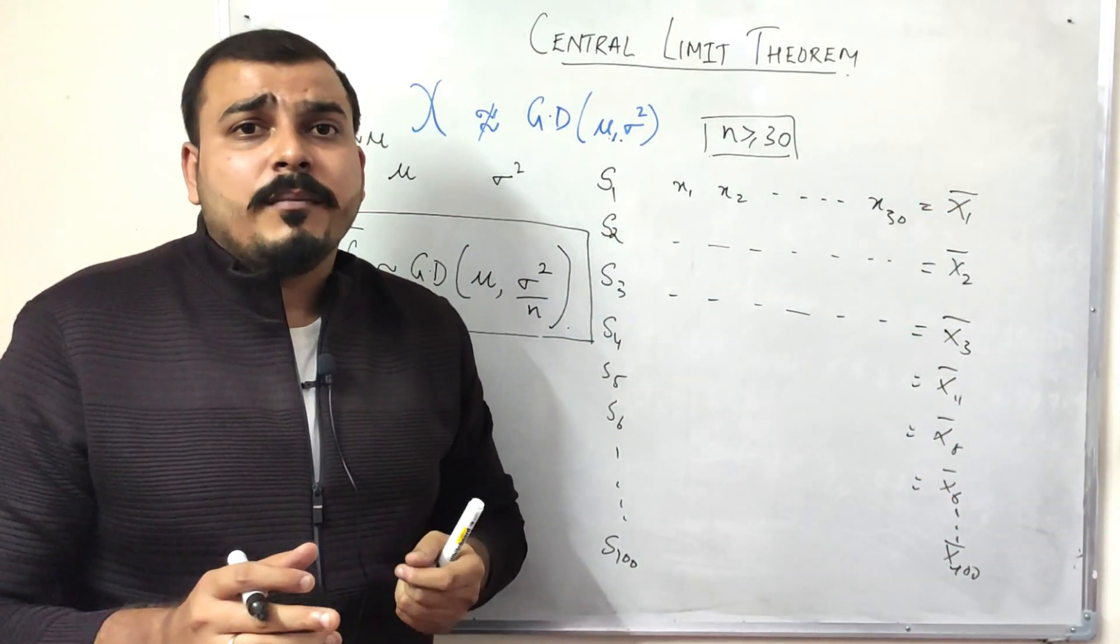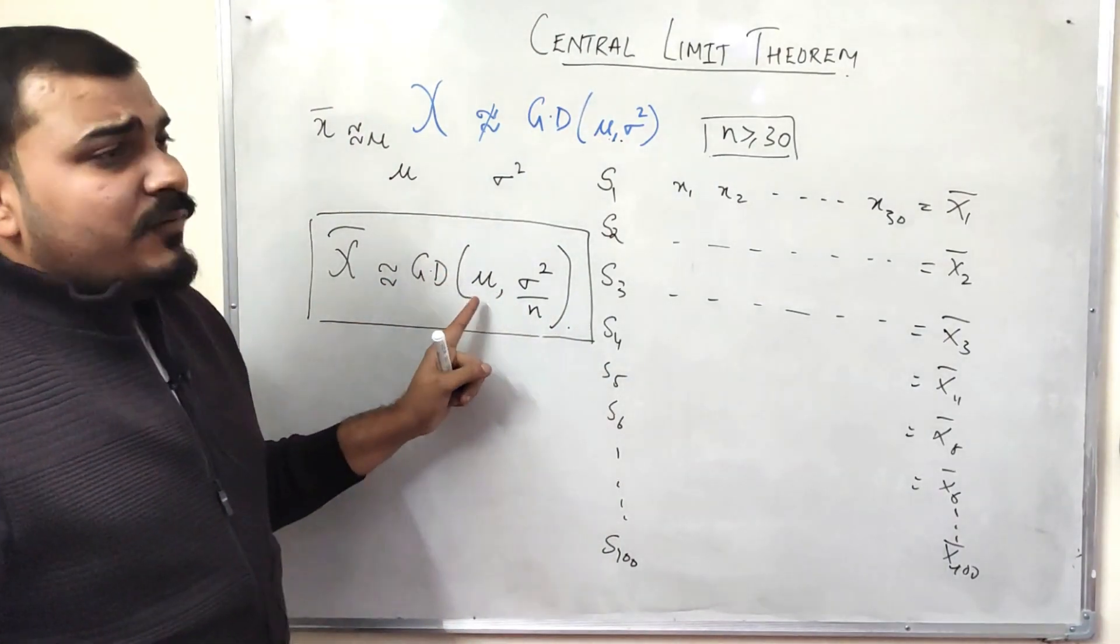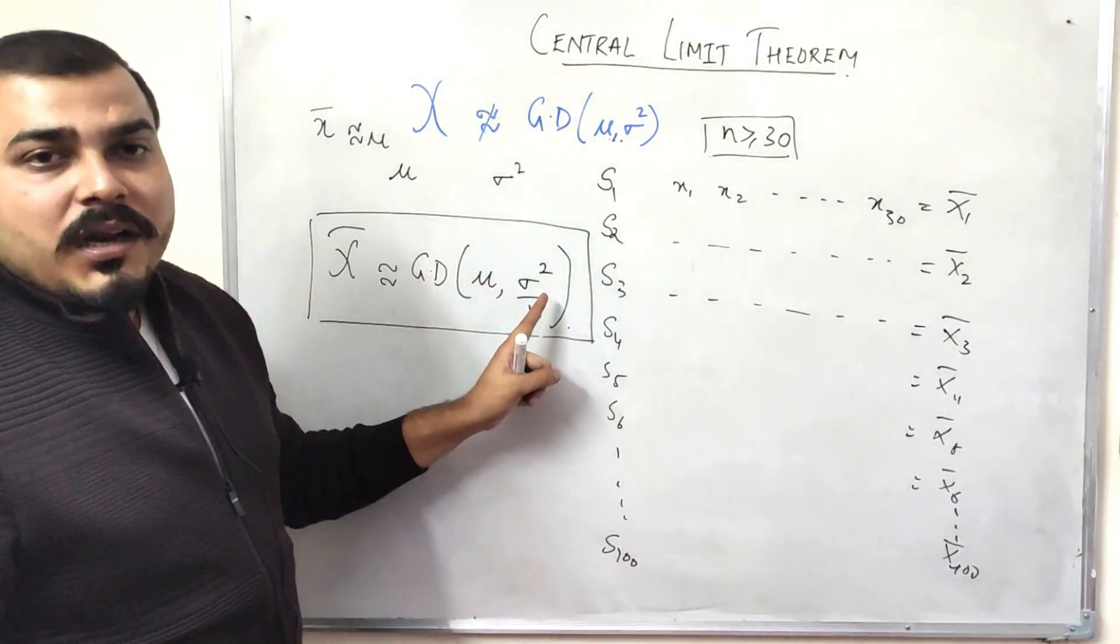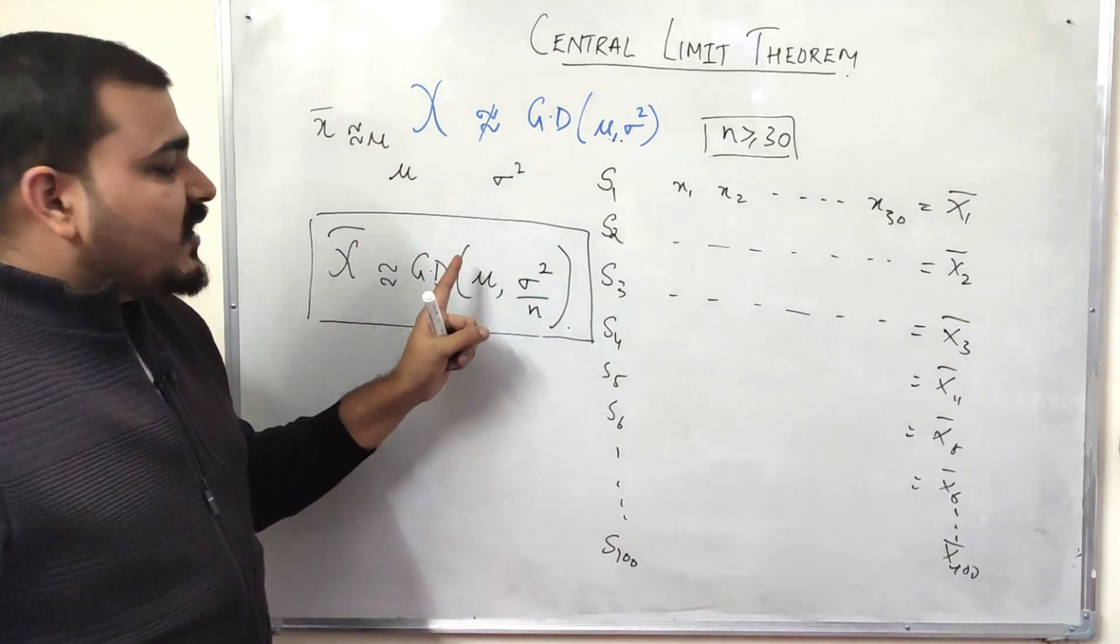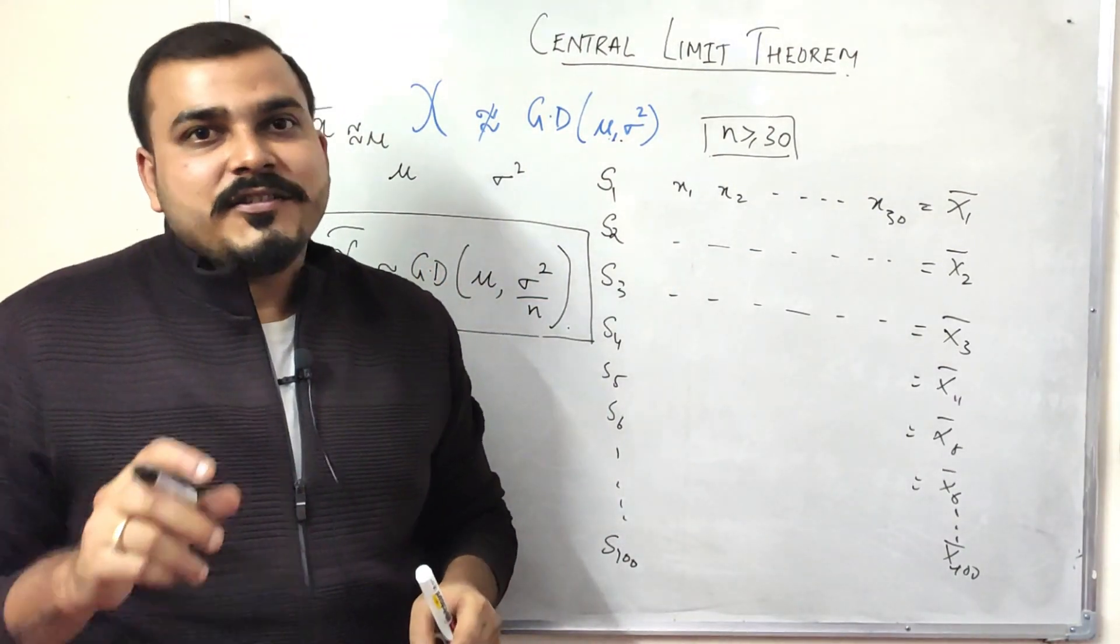And if I try to find out all the means and plot this mean with the help of a histogram or probability density function, then it follows a Gaussian distribution with mean approximately equal to μ and variance σ²/n. If I'm saying it's a Gaussian distribution, it will have that bell curve—always remember.